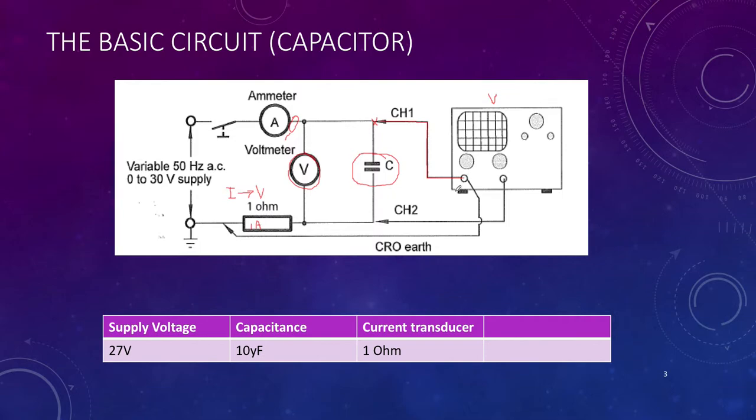On channel two, we're actually measuring the voltage across the 1 ohm resistor. So channel one is measuring voltage and effectively, channel two via our 1 ohm resistor is measuring current. So channel two is current. Nice and simple.